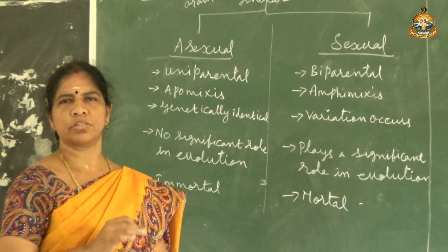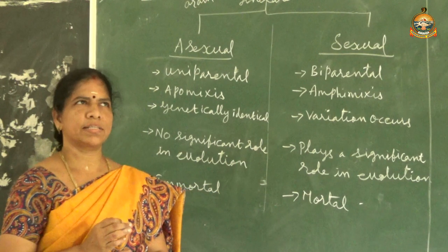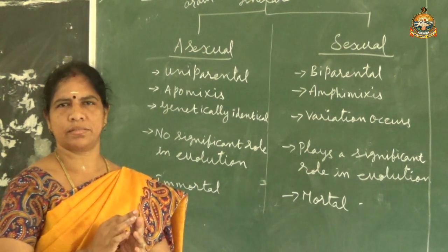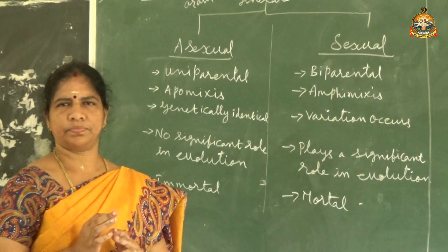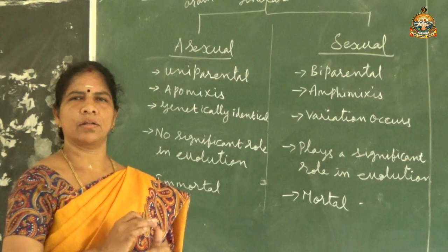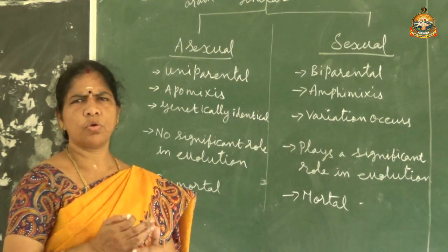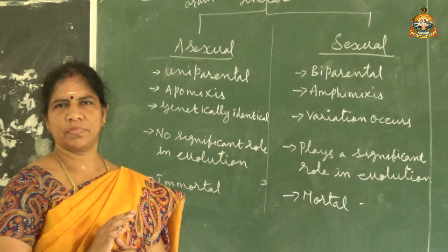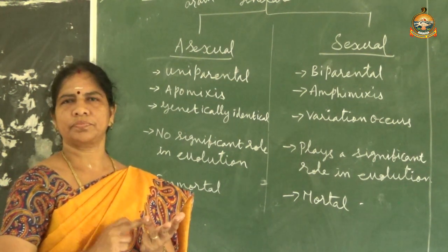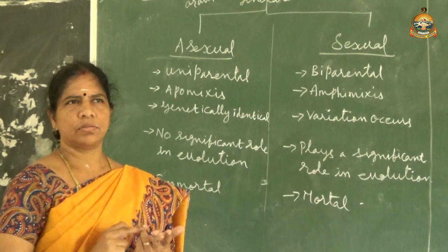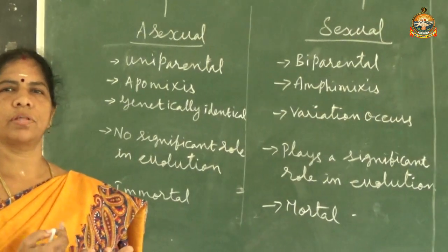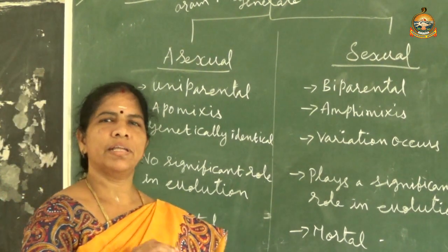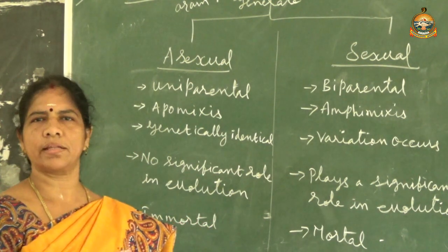What will happen if reproduction does not occur? For example, if there is no reproduction in bees, at some point no bees will exist on earth. If there are no bees, the balance of the ecosystem will definitely be affected - there will be no coordination, and resources like honey will also be lost. So reproduction is necessary for all living organisms to maintain the balance of the ecosystem.